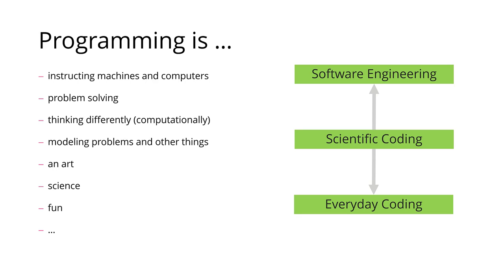I also want to point out that although this is sometimes seen this way, you are not either a programmer or not a programmer. There is a job title 'software engineer' where programming is your full-time job, but the spectrum is large. There's everyday coding — you don't need to do this professionally to just build something that does something for you. And there's scientific coding, where you just write a little program that helps with your research.